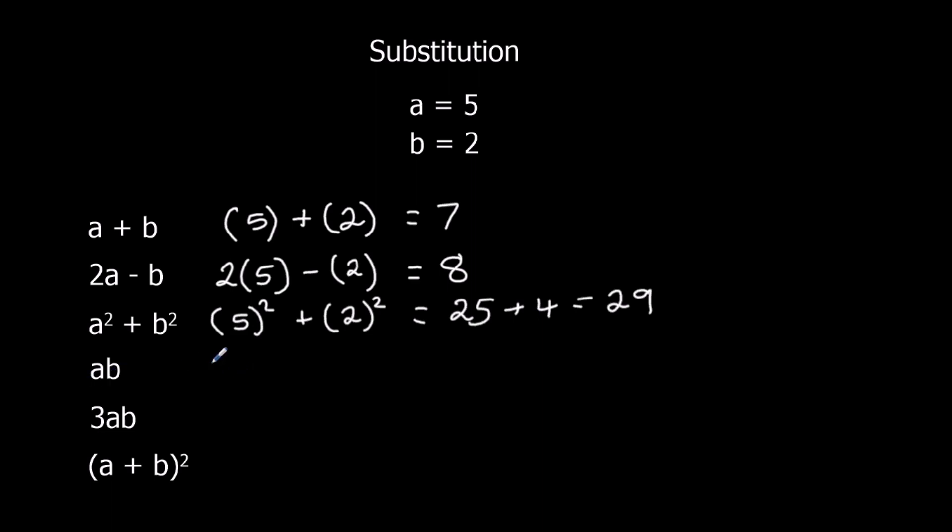AB, that means A times B, so I've got 5 times 2. 5 times 2 is 10. 3AB, so 3 times A times B. So 3 times 5 times 2. 3 times 5 is 15, double 15 is 30.